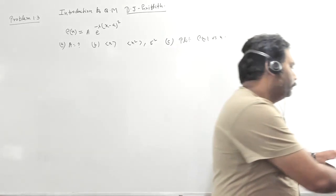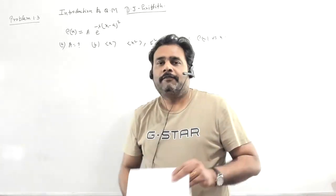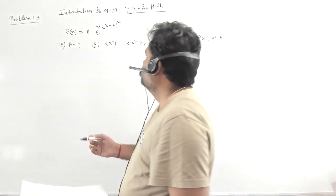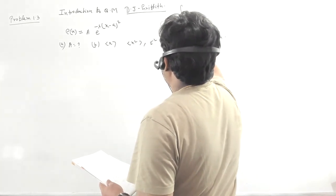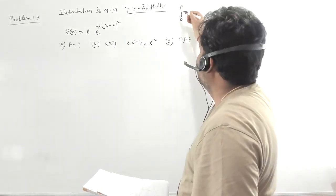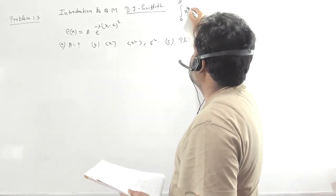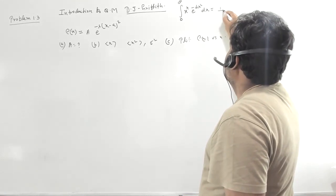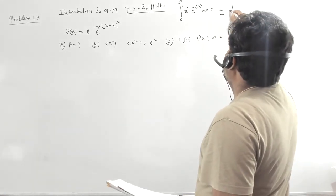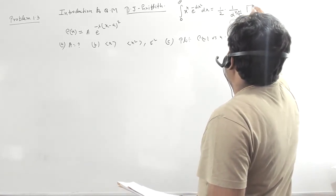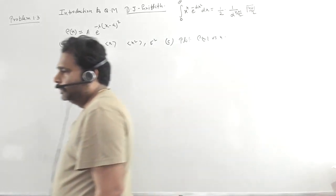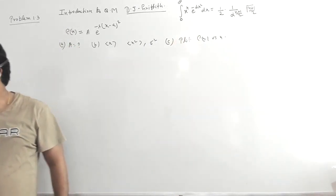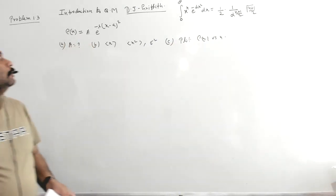Before going to this problem, let me explain that we should first revise one particular integration — the gamma integral and one form of the gamma integral. You should make sure you know this integration because I will use it as a formula. The integral from 0 to infinity of x^n · e^(−αx²) dx equals (1/2) · (1/α)^((n+1)/2) · Γ((n+1)/2). This is a very important integration.